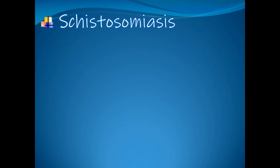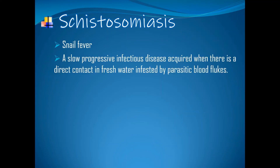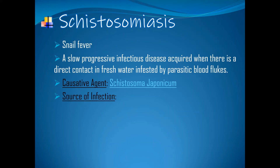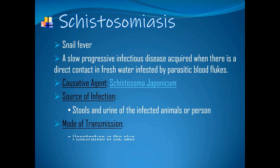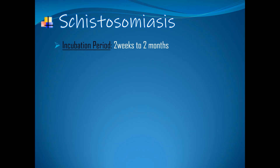Our last topic is Schistosomiasis, also known as snail fever. It is a slow, progressive infectious disease acquired when there is direct contact with fresh water infested by parasitic blood flukes. The most common causative agent in the Philippines and China is Schistosoma japonicum. Sources of infection: stools and urine of infected animals or persons. Mode of transmission — penetration in the skin: people become infected when larval forms of the parasite from freshwater snails penetrate the skin. Also, ingestion of contaminated water. Incubation period is 2 weeks to 2 months.